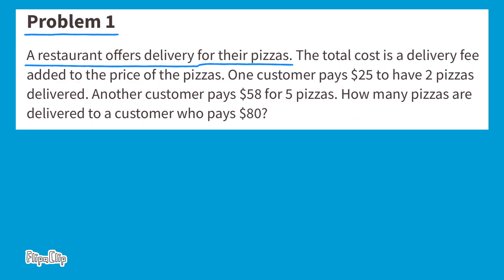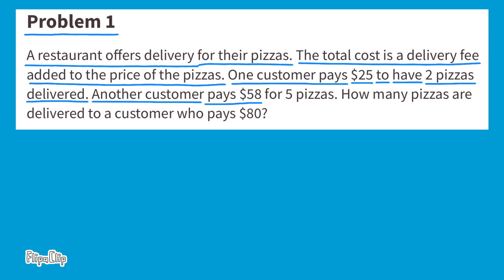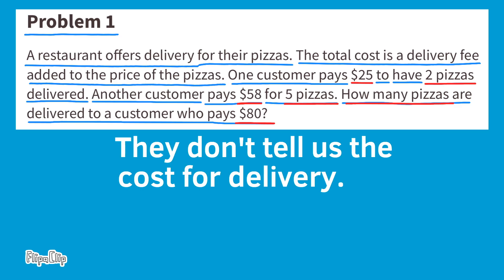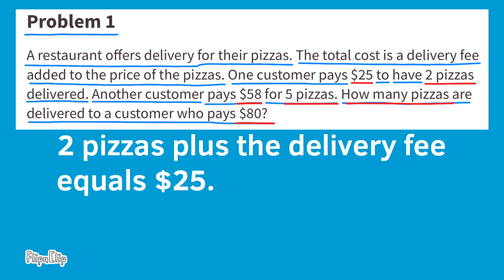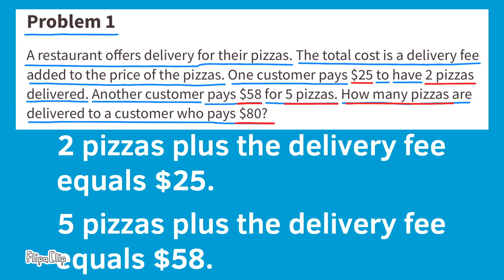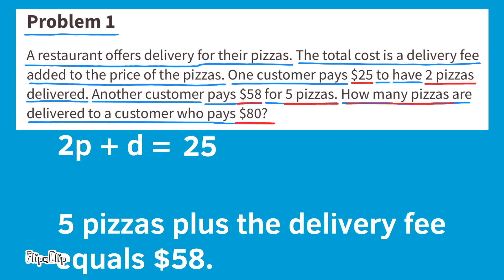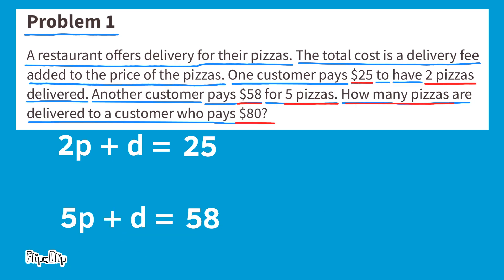Problem number one. A restaurant offers delivery for their pizzas. The total cost is a delivery fee added to the price of the pizza. One customer pays $25 to have two pizzas delivered; another pays $58 for five pizzas. How many pizzas are delivered to a customer who pays $80? Key information: $25 for two pizzas, $58 for five pizzas, unknown number of pizzas for $80. The delivery fee is unknown. So: 2p plus d equals 25, and 5p plus d equals 58.